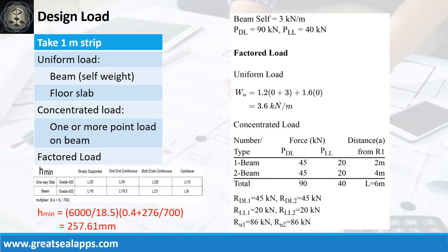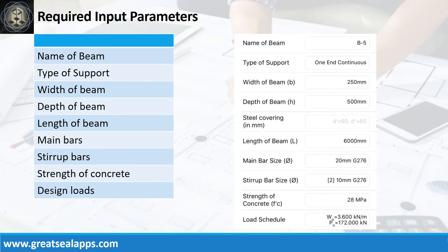The beam's self-weight is 3 kN per meter, for a factored uniform load of 3.6 kN per meter. The beam carries two concentrated loads, each with dead load of 45 kN and live load of 20 kN, for a total factored concentrated load of 172 kN.